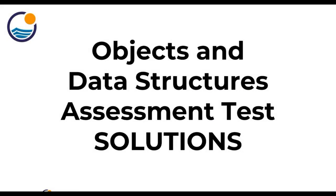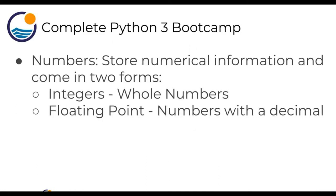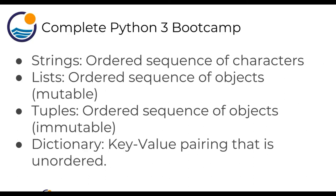In this lecture, we're going to quickly go over the solutions for the objects and data structures assessment test. The first question just asks for a brief description of all the following object types and data structures. Numbers: there are basically two types — integers for whole numbers and floating points for numbers with a decimal. Strings are an ordered sequence of characters. Lists are an ordered sequence of objects and are mutable, meaning you can change items in a list. Tuples are very similar to lists except they're immutable — still an ordered sequence of objects. And dictionaries are key-value pairings, and remember those are unordered.